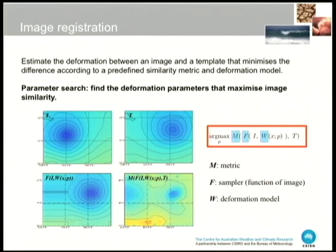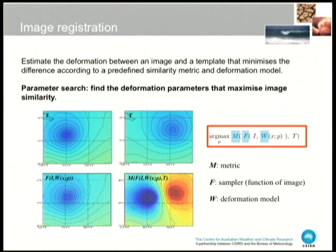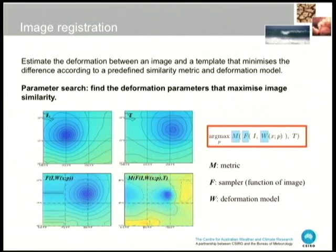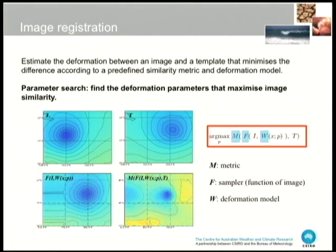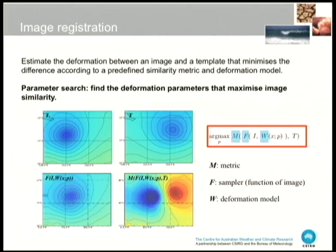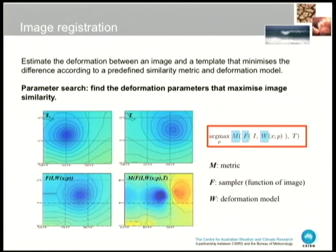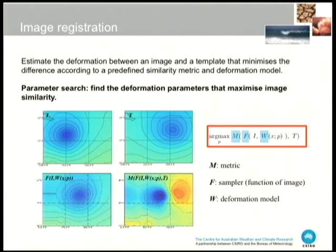This is my one-slide explanation of image registration — it is not adequate. But what I want to get across is that image registration, warping, and morphing, in my mind, all basically mean the same thing. When I wrote my PhD thesis I got burnt pretty heavily for saying warping and morphing were the same thing, but I just don't care anymore — they are.